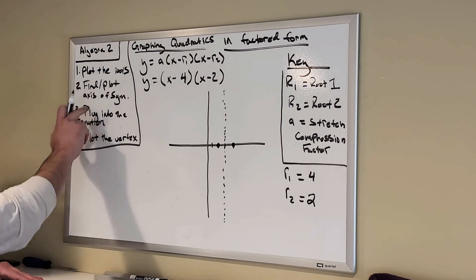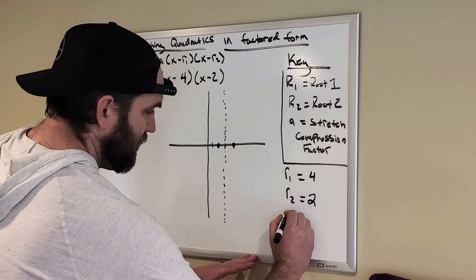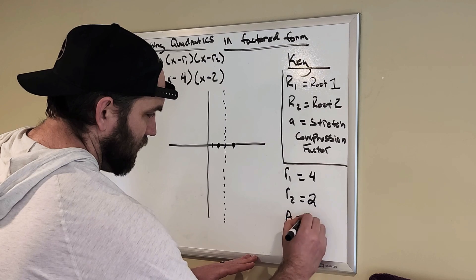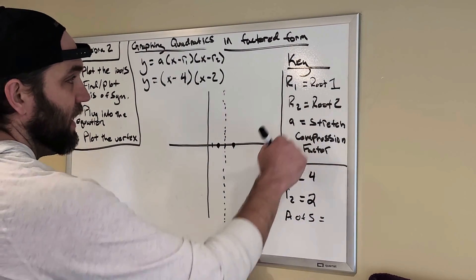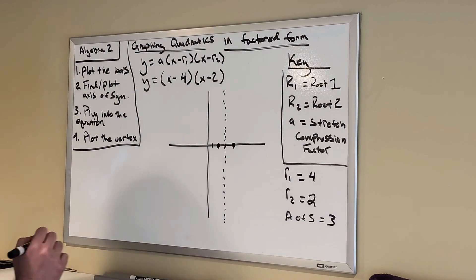Now, I got the axis of symmetry. I found out that my axis of symmetry, I'm going to put a of s, meaning axis of symmetry. And then, I'm just going to put 3 because I found out that my axis of symmetry is 3.